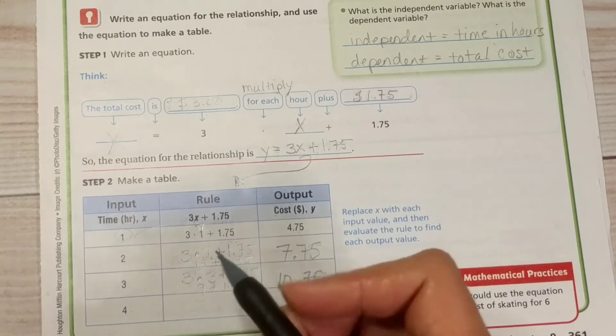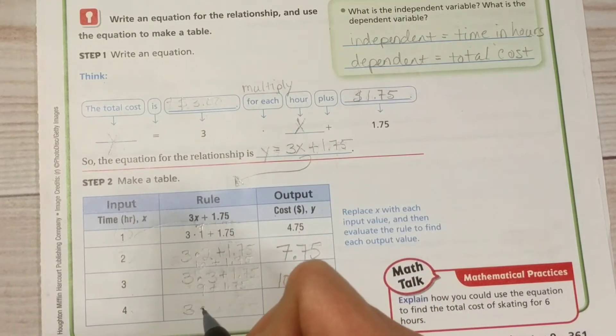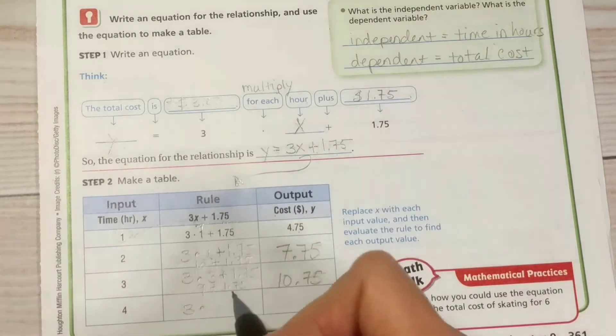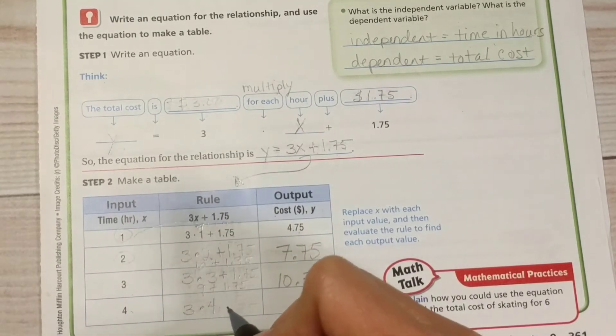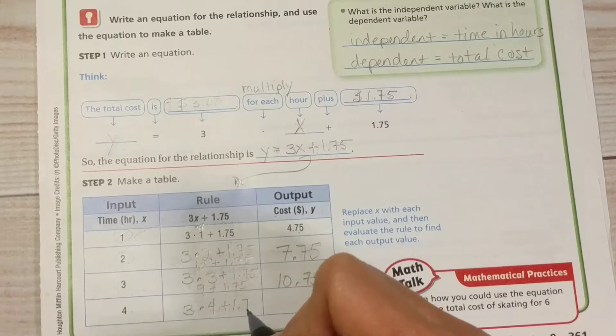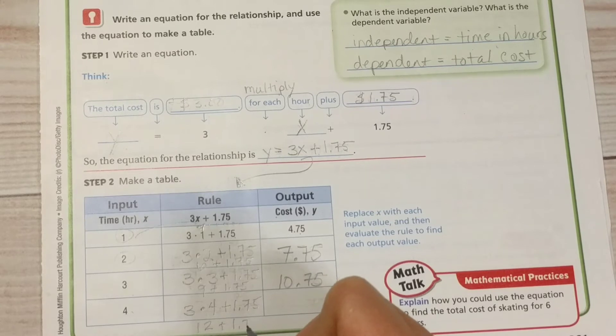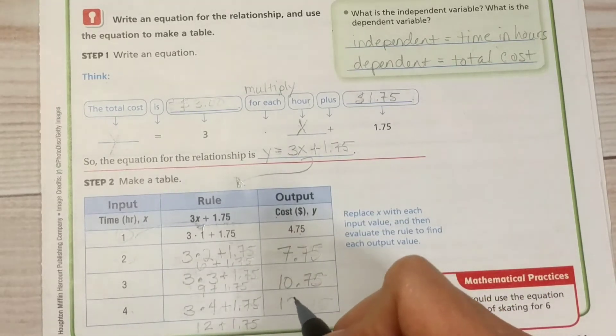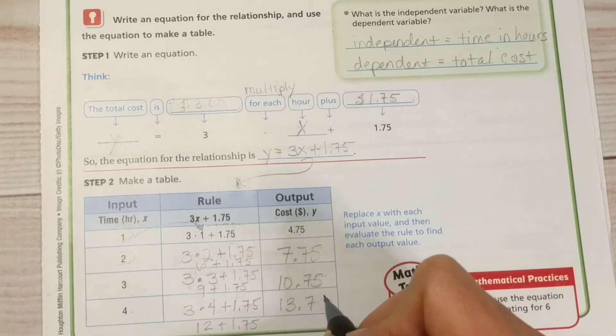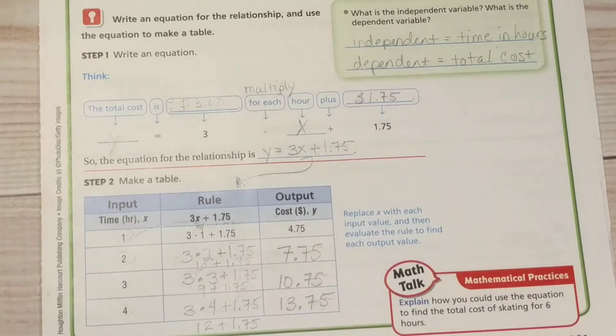Finally, for 4 hours of skating, 3 times 4 plus $1.75 gives us $12 plus $1.75, which is a grand total of $13.75. So if we skate for 4 hours, it's going to cost us $13.75.